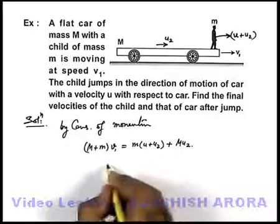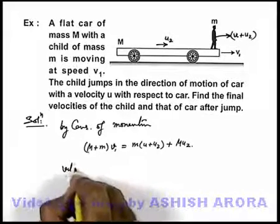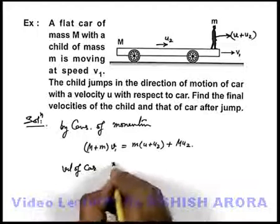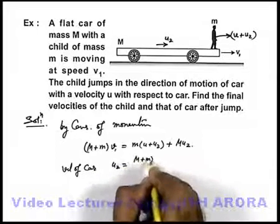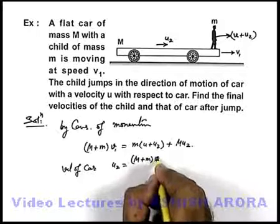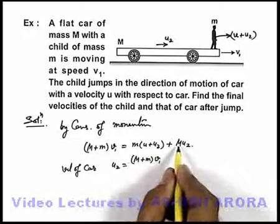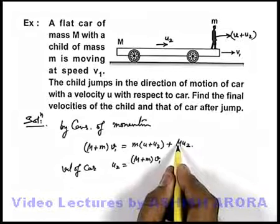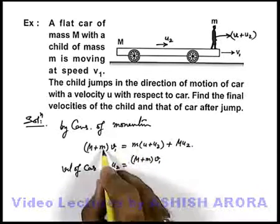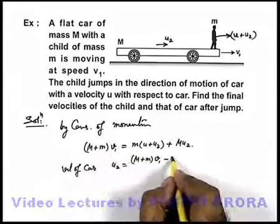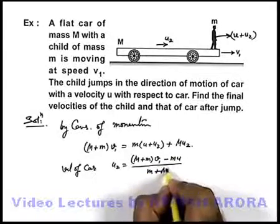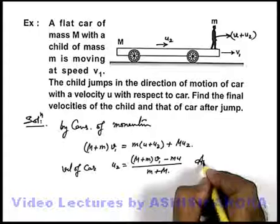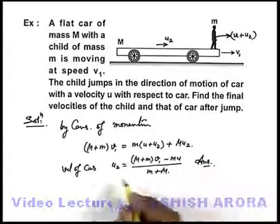Now in this situation, if we simplify this, the velocity of car u2 can be directly written as capital M plus small m into v1, and this term if we take it on the left hand side, small m u will become minus small m u upon capital M plus small m. That will be one answer to this problem, which is the velocity of the car.